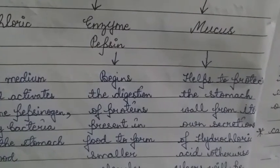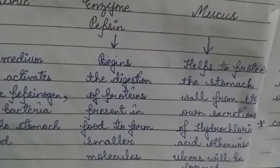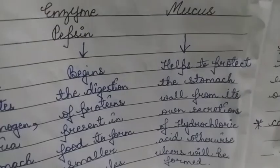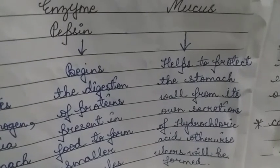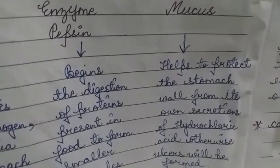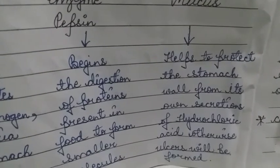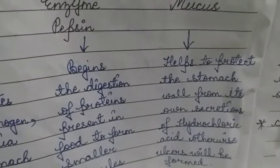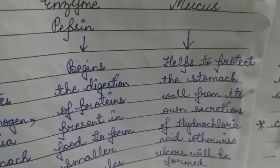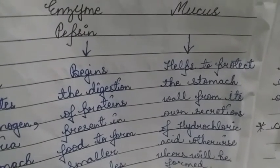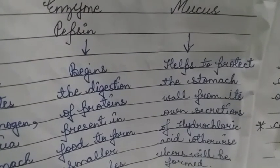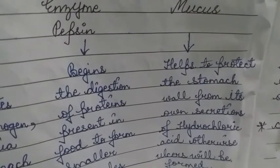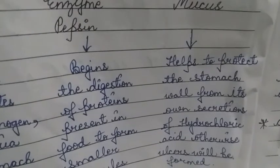The next component of gastric juice is enzyme pepsin, which helps in the digestion of proteins. Next is mucus — mucus protects the stomach from the secretion of HCl. Otherwise, ulcers would form in the stomach because HCl is a strong acid; without mucus, it could erode the stomach wall, causing ulcers.